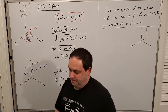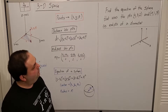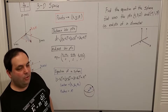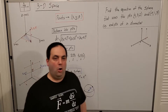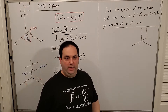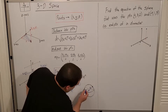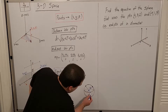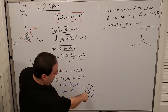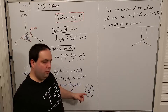Let's do an example: find the equation of the sphere that uses the points (4, 3, 2) and (-4, 1, 8) as endpoints of a diameter. Remember, a diameter goes through the center and intersects the sphere on either side. I've got a graph here showing these two points in 3D space. For (4, 3, 2): 4 along x, 3 parallel with y-axis, 2 parallel with z-axis. For (-4, 1, 8): negative 4 on x, 1 on y, 8 on z.